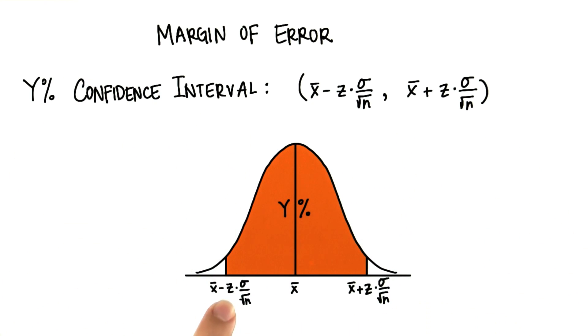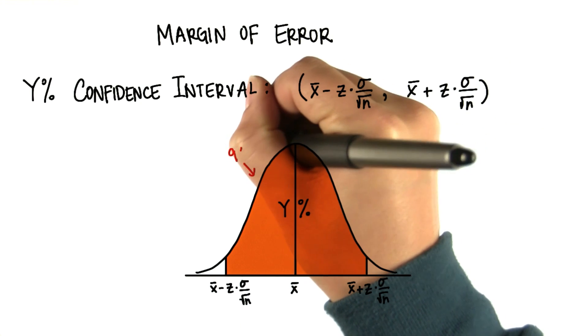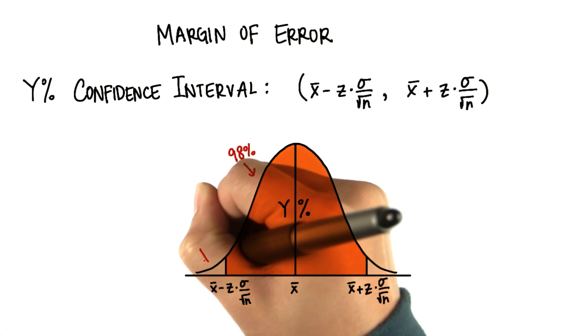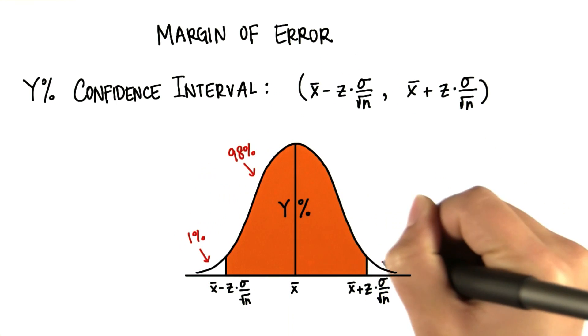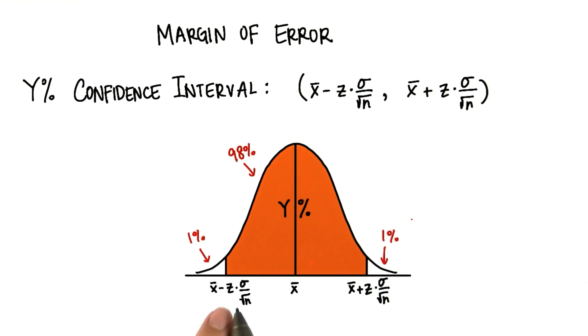Remember that we get this z value from the z table. So if this is a 98% confidence interval, let's say, then we'll have 1% in the tails. And then we'd look for the z score for which 1% is less in a standard normal distribution.